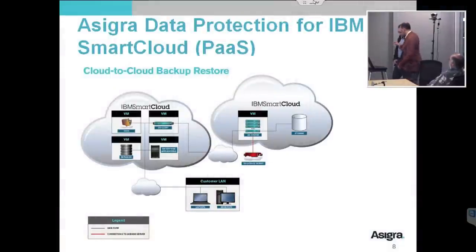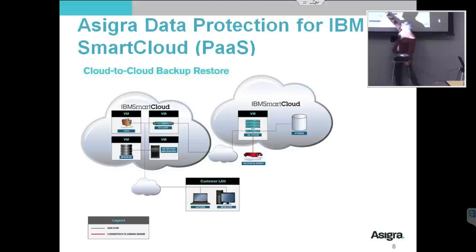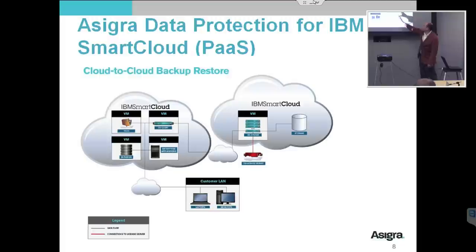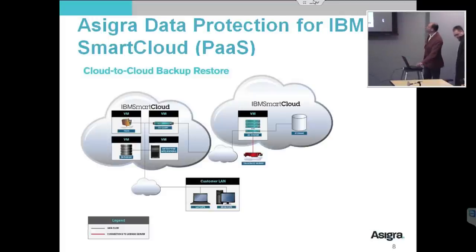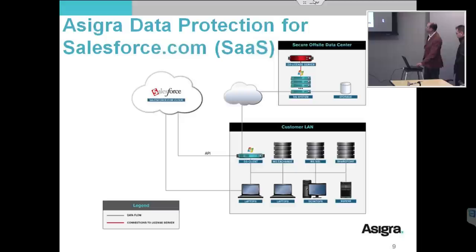Quick summary: we talked about IBM SmartCloud. We have a DS client sitting inside SmartCloud able to backup data inside it and send it to a different cloud — Japan to Canada. You can run the vault in your own enterprise cloud and back up to it, or keep the repository in IBM SmartCloud and back up your enterprise data into SmartCloud. We talked about Salesforce.com and the APIs we're leveraging. You can back up Salesforce data to your own data center, your service provider's data center, or another cloud.